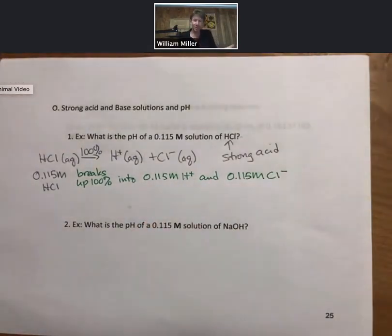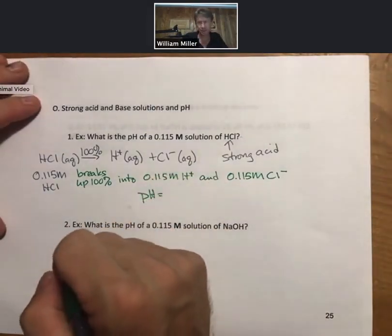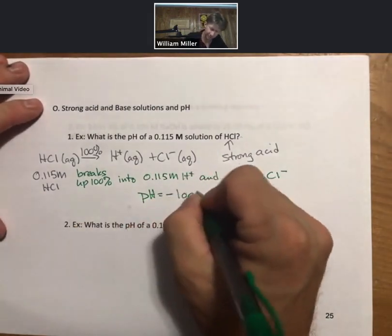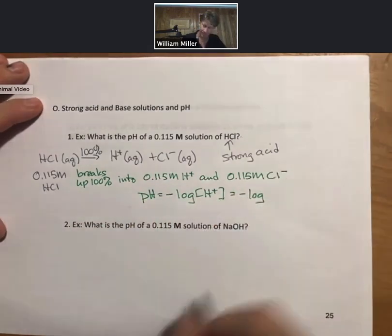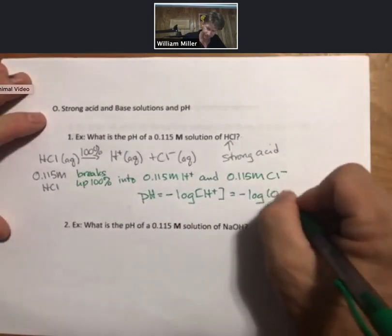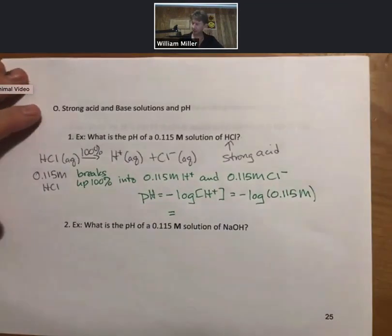Now we have the concentration of H+. Boom. Do not pass go. Do not collect $200. Go straight to the pH equation and plug in your concentration and calculate your pH.